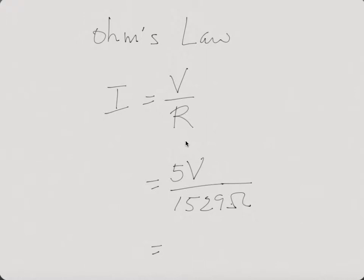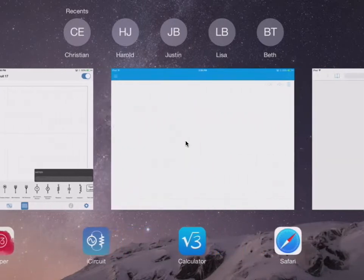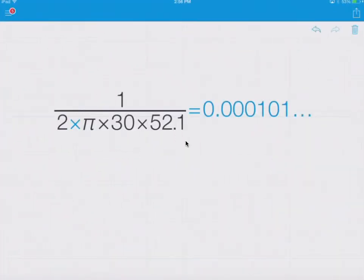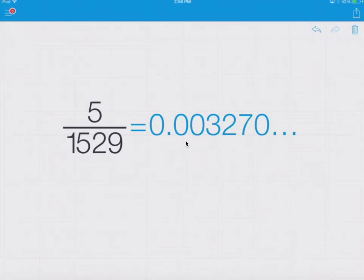we'll actually get a result. Let me go here and do this calculation. We'll end up with something that looks like 5 divided by 1529. So that's what,